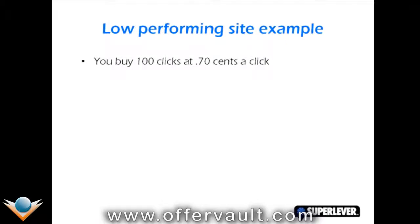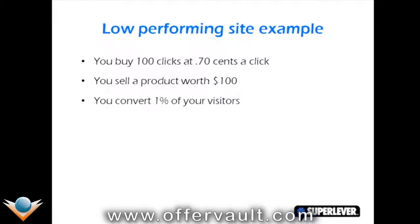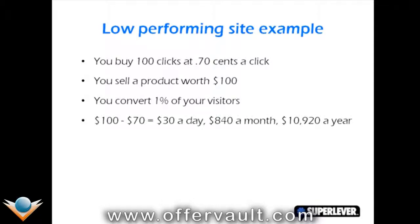Now let's look at a second example — a low-performing website where you're buying 100 clicks at 70 cents a click, selling a product worth $100, and converting just 1% of visitors. You'd have $100 minus $70 in pay-per-click costs, making $30 a day, $840 a month, and $10,000 a year. It's not a massive income, but by focusing again on traffic, conversion rate, and a little lifetime customer value, we can cause this profitability to grow exponentially.